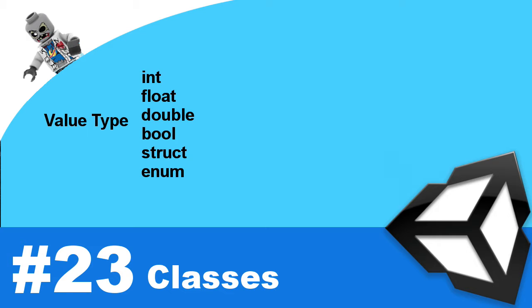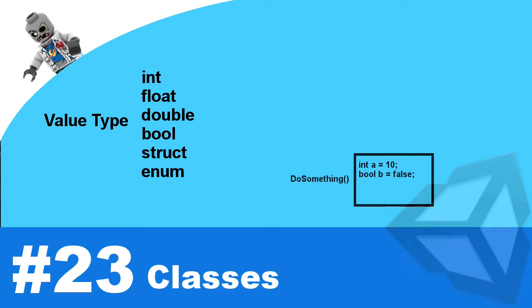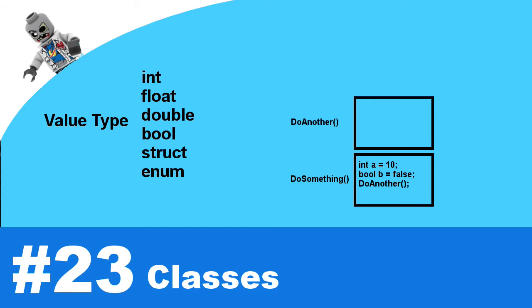Any variables that you create within that method will be placed within that stack frame. So if I create an int and a bool, those would both be within that stack frame. Now within that stack frame, if we call another method, a new frame will be added on top of the previous one. And within that frame we create a double, then that frame calls another method and another frame is put on top of that, and so on.